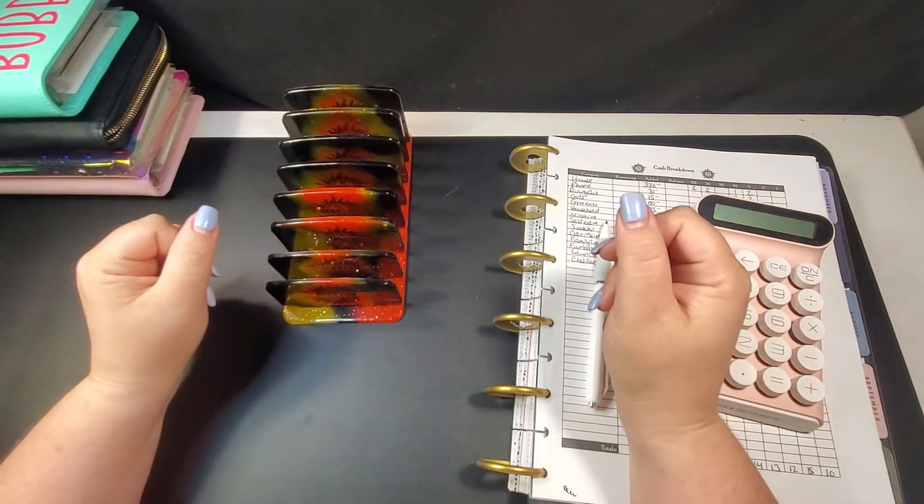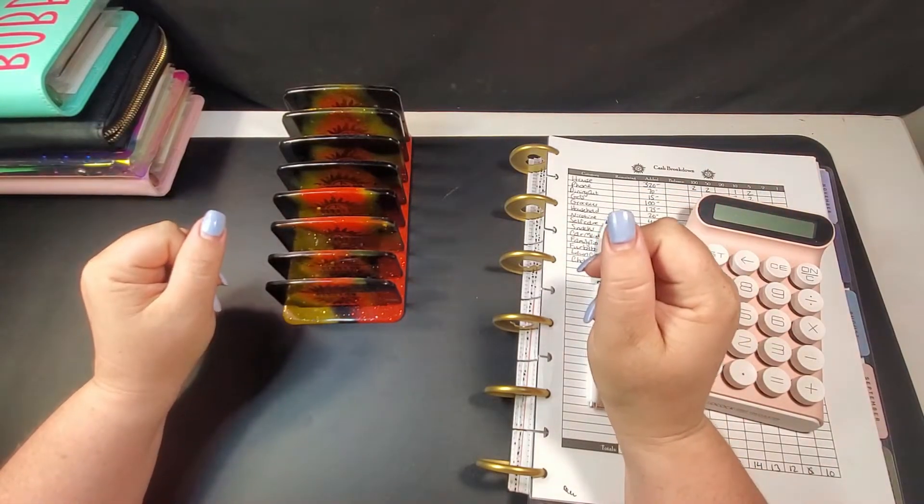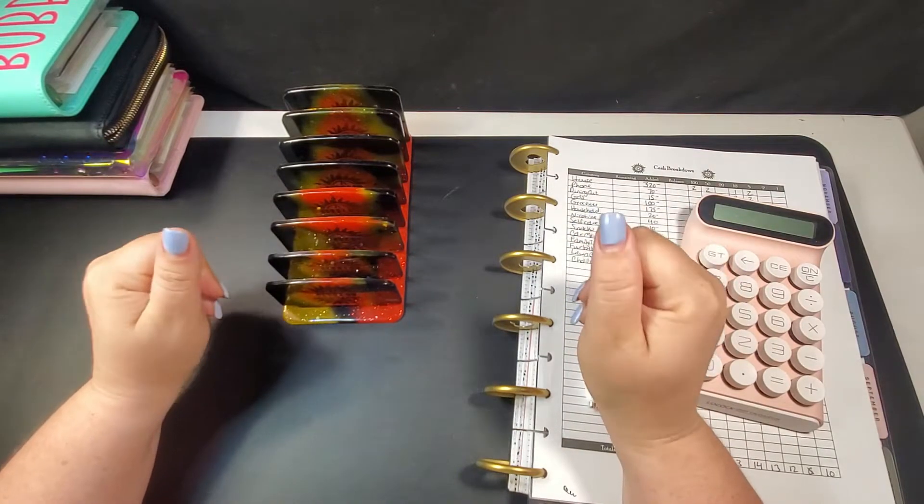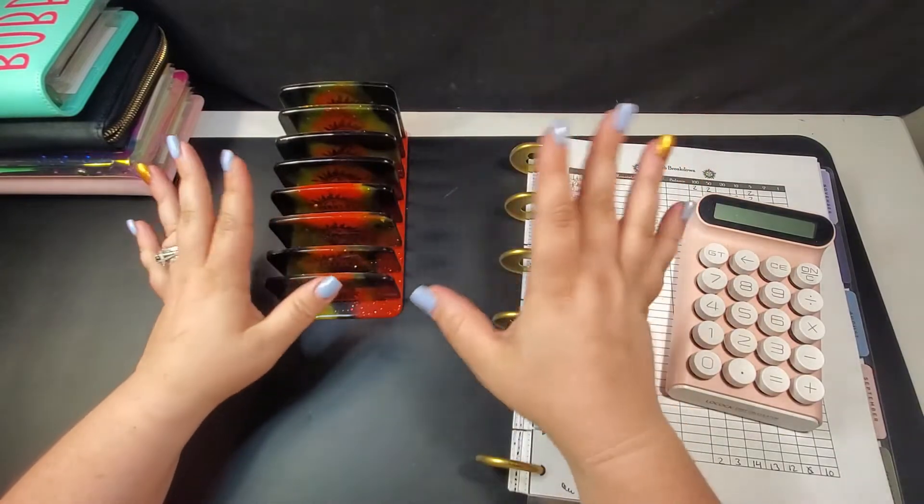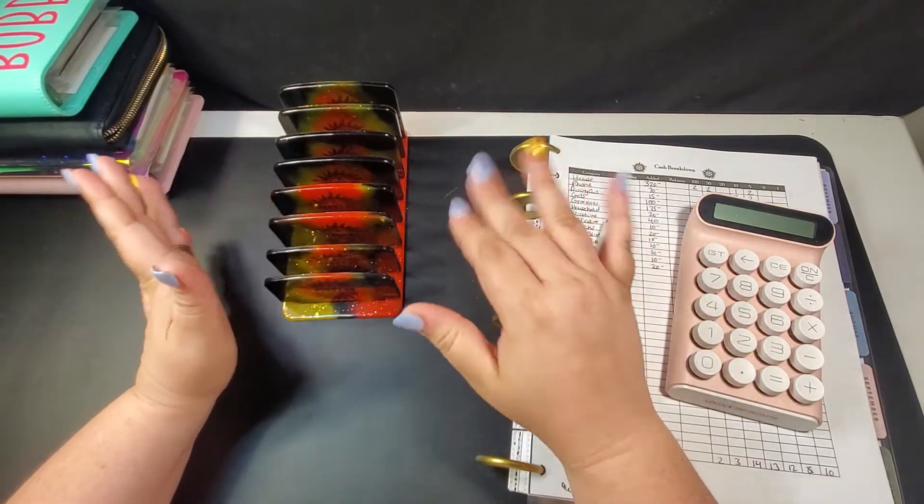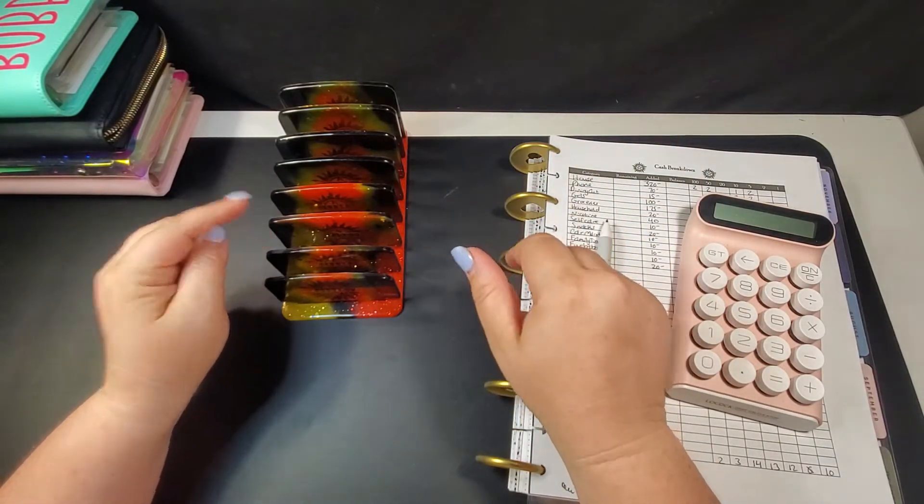Hello you guys and welcome or welcome back to my channel. If you're new here, my name is Christina. I am 36 years old, I'm an all-cash budgeter from Tennessee, and I am 100% in love with the show Supernatural. We are on a limited time frame today, but I did want to go ahead and be sure to get this video recorded and get it out to you guys. This is our fourth cash stuffing for the month of June.